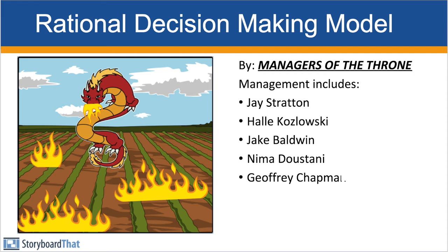Good afternoon, Finger Puppet Management TV. Today we will be going over the Rational Decision-Making Model. We will use a decision that the Khaleesi from Game of Thrones needs to make in order to control her dragons and maintain the popular support of the people that she is ruling. The Rational Decision-Making Model has seven steps to it.